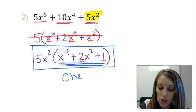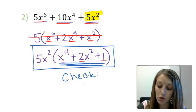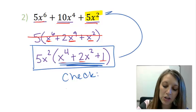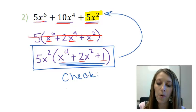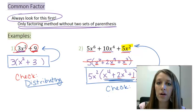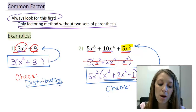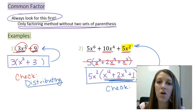And you can always check these. Specifically in common factor, you check it by distributing. If I distributed that 5x squared back through, I should end up with my original problem. This is where I'm going to stop this video. And in the next video, we're going to be learning some more factoring techniques. And trust me, those techniques are going to be more complicated than this one here of common factor.